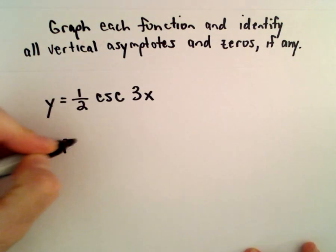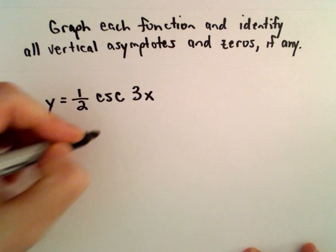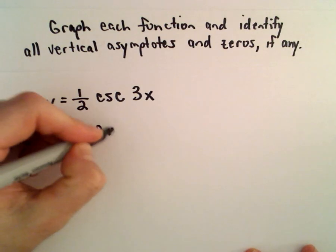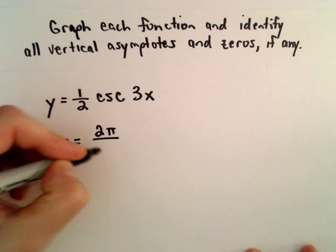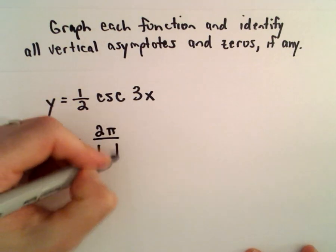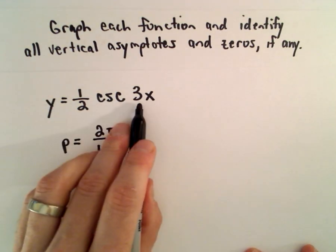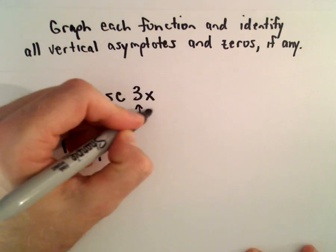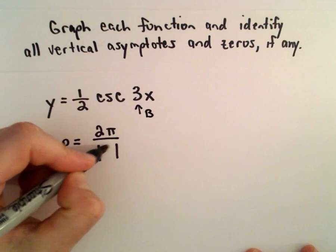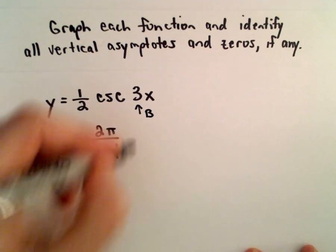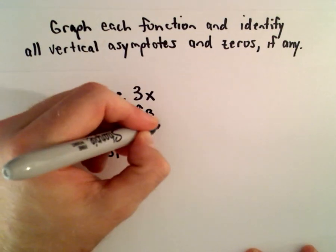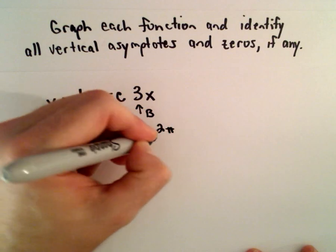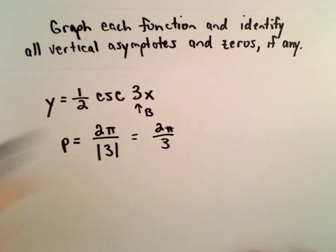The first thing I'm going to do is find the period of this. To get the period, we'll take 2 pi and divide it by the absolute value of b. In this case, 3 is going to be our b value. So our period is just going to be 2 pi over 3.